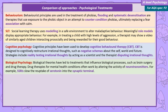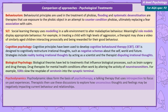Biological theories have led to treatments that influence biological processes, such as brain surgery and drug therapy. Drug therapies for mental health conditions often work by altering the activity of neurotransmitters — for example, SSRIs work by slowing the reuptake of serotonin into the synaptic terminal.